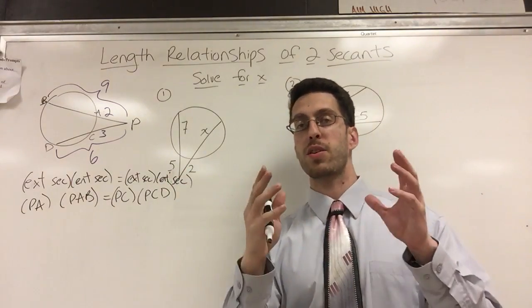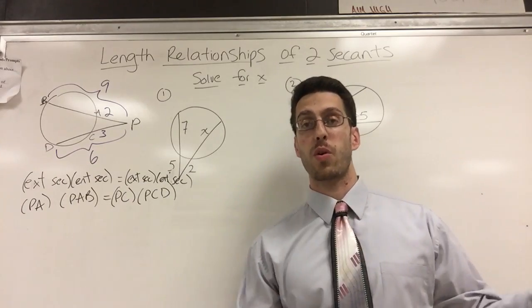So my basic summary is the outside times the whole thing equals the outside times the whole thing. That's it. So equals external secant times entire secant number one. So here's my formula. External times the whole thing equals external times the whole thing of the other one.